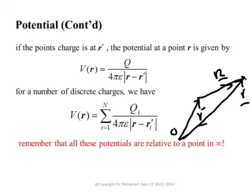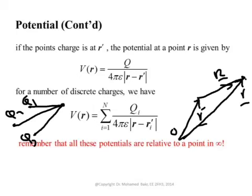For a number of discrete charges, superposition still applies. If we have charges Q1, Q2, Q3 at different positions, we find the distances R1, R2, R3 from each charge to the observation point, and the total potential is the sum of the individual potentials. Again, all potentials are relative to infinity — there is no absolute potential; absolute potential means you have chosen a reference point and assigned it zero voltage.